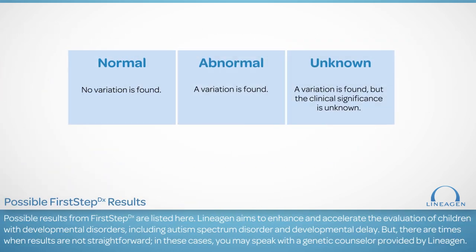Possible results from First Step DX are shown here. Lineagen aims to help in the evaluation of children with developmental disorders, including autism spectrum disorder. There are times when the results are not straightforward; in these cases, you may speak with the genetic counselor provided by Lineagen. Overall, results may be normal, abnormal, or unknown. It is important to know that these labels refer to the results of the test itself, and not to the person being tested.